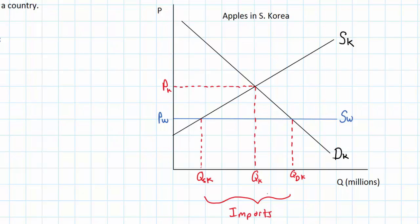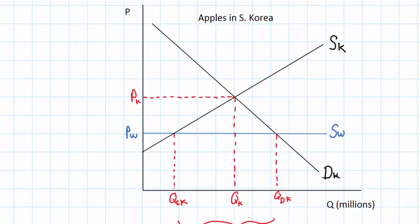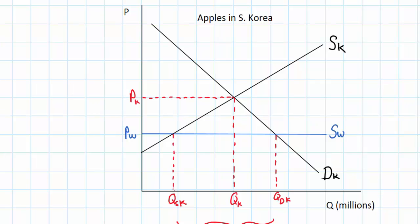What happens if the Korean government establishes a physical limit on the quantity of imports allowed into the country? Let's say the government says that imports are limited to a quantity equal to two squares on my graph. The limit on apple imports is from QSK to QQ — I'll call that the quota quantity. The number of apples legally allowed to be imported into Korea has been reduced dramatically from QSK to QQ.